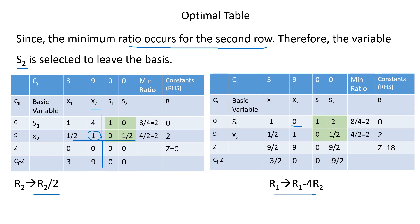Now let's calculate the new zj values. For x1: 0 × (−1) + 9 × (1/2) = 9/2. For x2: 0 × 0 + 9 × 1 = 9. For s1: 0 × 1 + 9 × 0 = 0. For s2: 0 × (−2) + 9 × (1/2) = 9/2. Now calculating cj minus zj: 3 − 9/2 = −3/2, 9 − 9 = 0, 0 − 0 = 0, and 0 − 9/2 = −9/2.